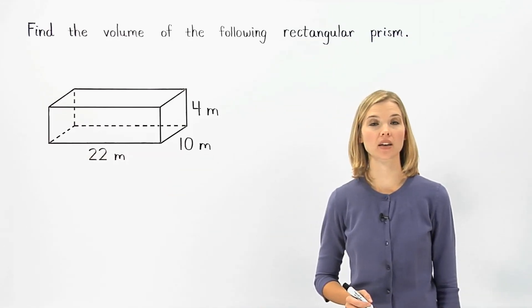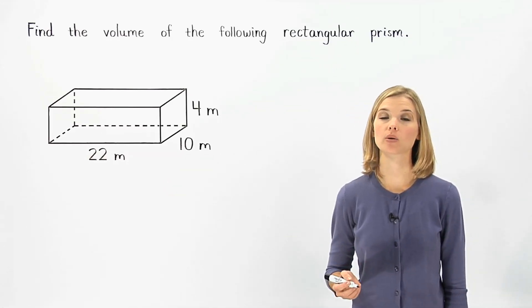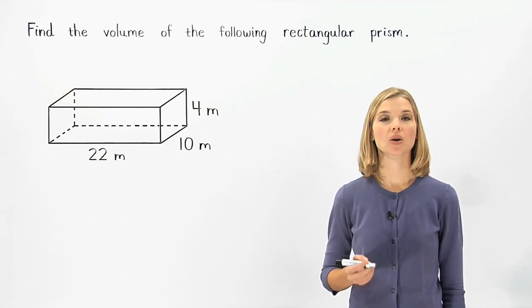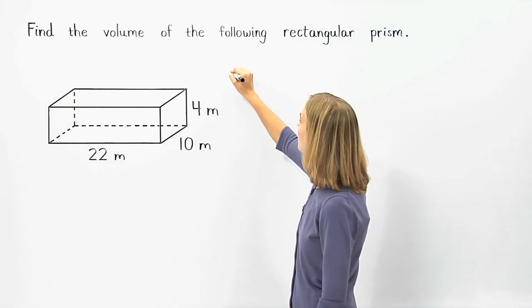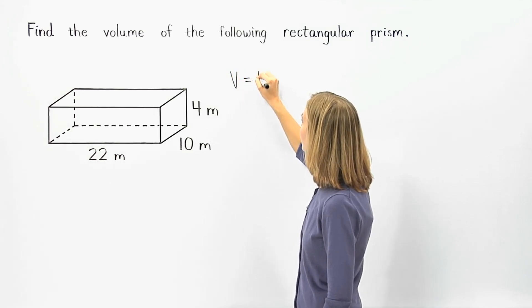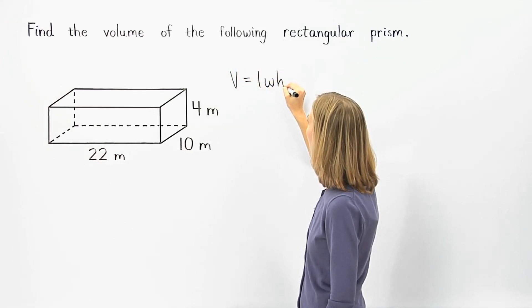To find the volume of a rectangular prism, or a prism whose base is a rectangle, we use the formula: volume equals length times width times height.